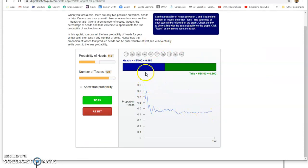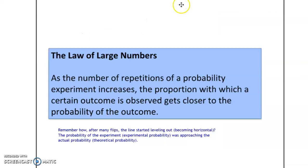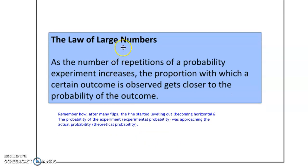As we flipped the coin many, many times, the experimental or empirical probability got very close to 0.5, which is what we should get — because the probability of getting heads and the probability of getting tails is 1 out of 2 on a coin. The proportion with which a certain outcome is observed, like heads, gets closer to the theoretical probability of that outcome. The law of large numbers simply says the probability of an experiment, if you're doing it many times, is going to approach the actual probability.